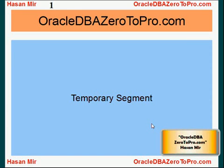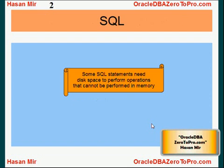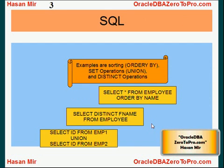Hello, welcome to OracleDBAprocom. This is Hassan Mir. In this tutorial I'm going to talk about temporary segments. Some SQL statements need disk space to perform operations that cannot be performed in memory. Examples include ORDER BY operations, SET operations, and DISTINCT or unique operations.